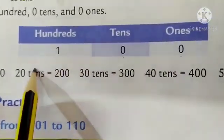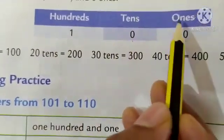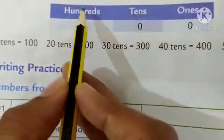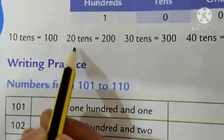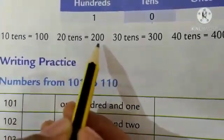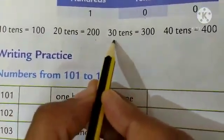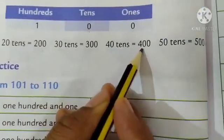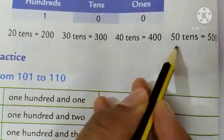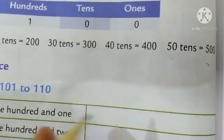So, the 3 digit number, the values, place values are like this. 1's, 10's, 100. 10 tens, 100. 20 tens makes 200. 30 tens makes 300. 40 tens, 400. 50 tens makes 500.